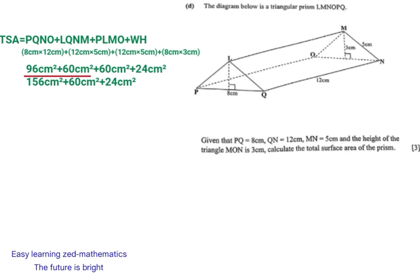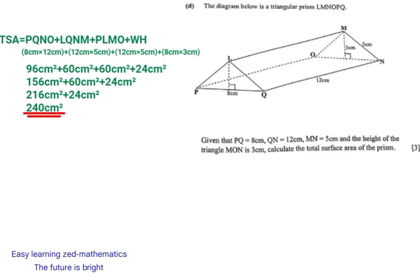So: 96 cm² plus 60 cm² gives us 156 cm², plus another 60 cm² gives us 216 cm², plus 24 cm² gives us 240 cm². So 240 cm² is the total surface area of this triangular prism. The total surface area of the triangular prism is 240 cm².